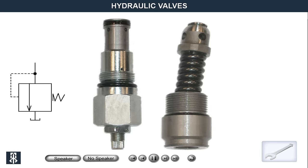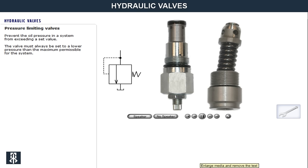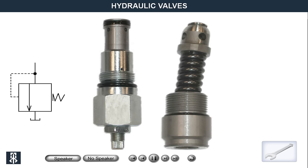The function of the pressure limiting valves is to prevent the oil pressure in a system from exceeding a set value. By the spring being compressed when the valve opens, the pressure at full fluid flow through will always be higher than the opening pressure. Since the opening pressure is lower than the flow-through pressure, the valve must always be set to a lower pressure than the highest permissible for the system.